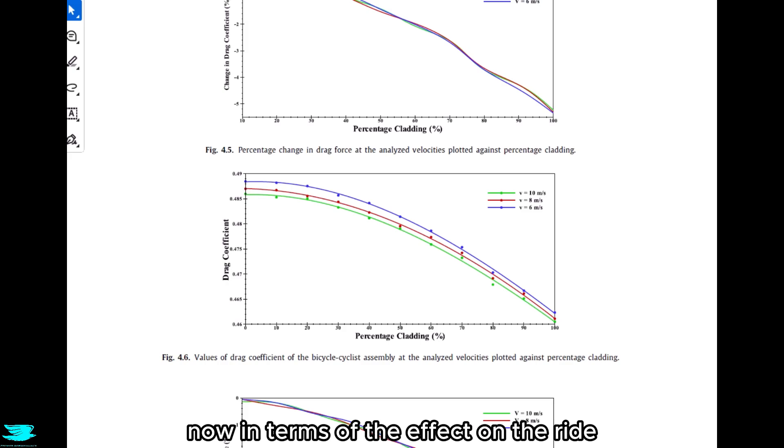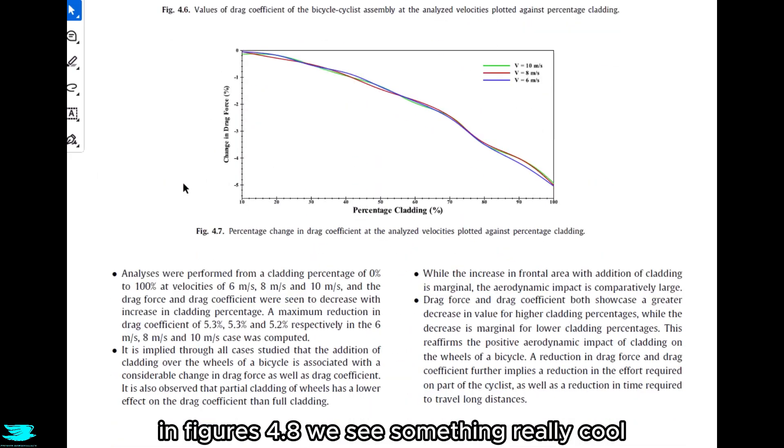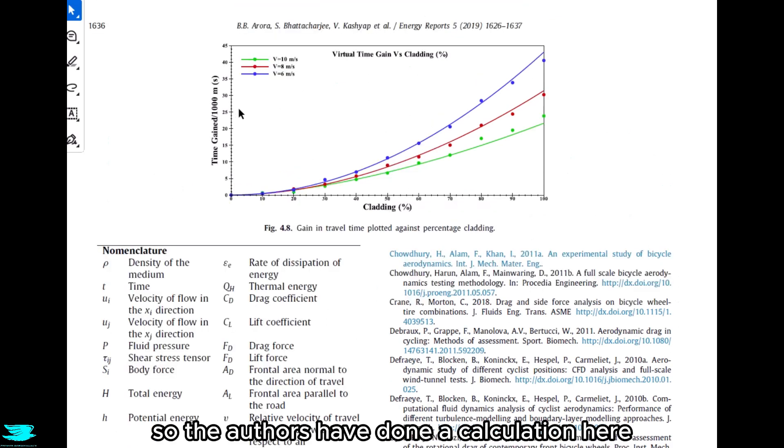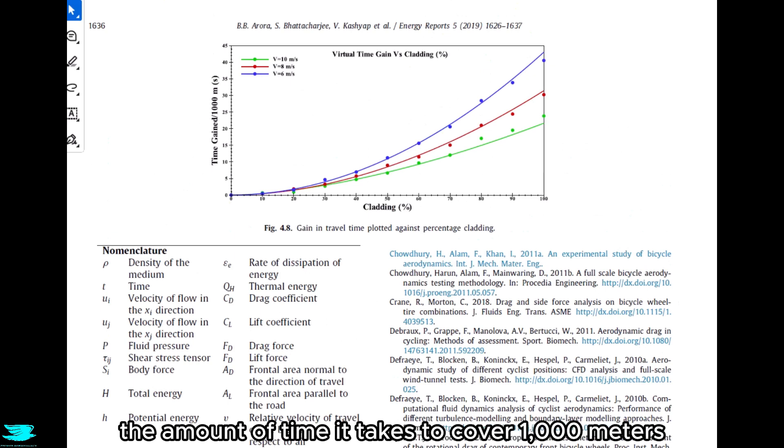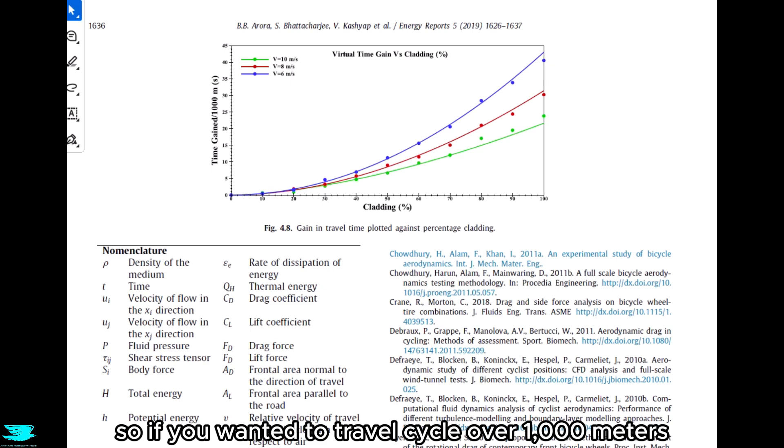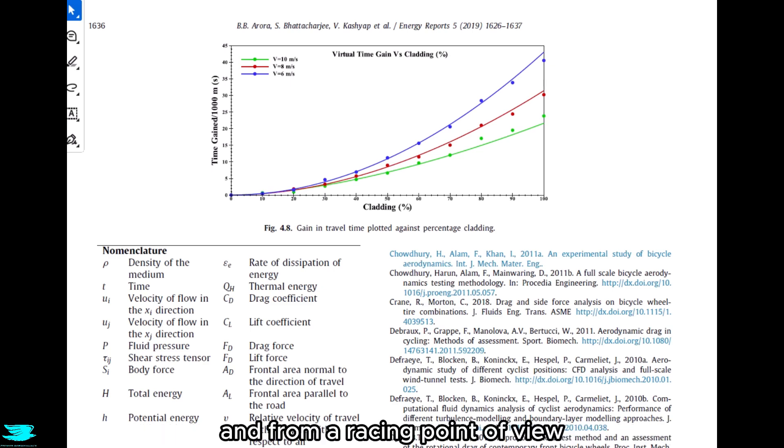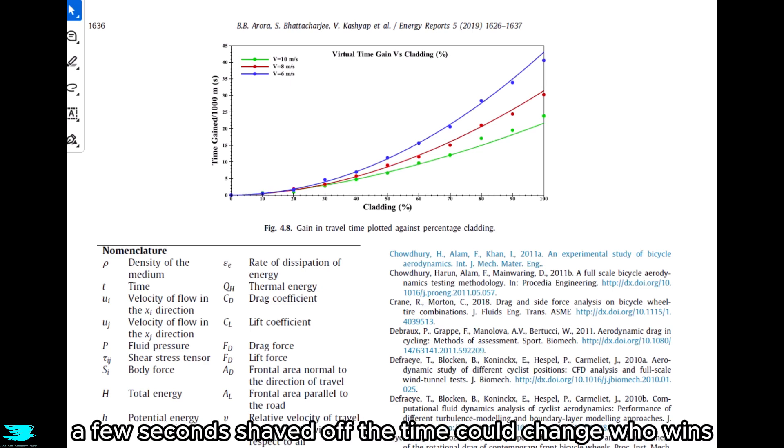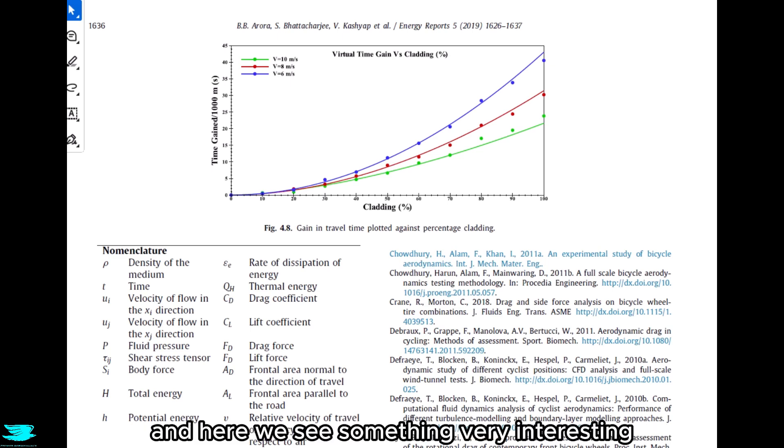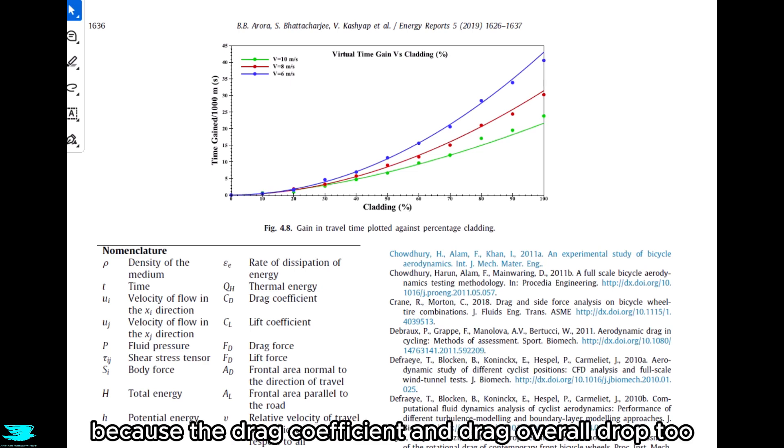Now in terms of the effect on the ride, in figure 4.8, we see something really cool. The authors have done a calculation here. They figured out how much of a difference these changes in the drag coefficient affects the amount of time it takes to cover 1000 meters. So if you wanted to cycle over 1000 meters, how much would the time change with this cladding? And from a racing point of view, that's very important. A few seconds shaved off the time could change who wins. And here we see something very interesting. Overall, cladding the rims saves you time, and that is for all these velocities tested. And the more cladding the rims have, the more time is saved. That makes sense because the drag coefficient and drag overall drop too.